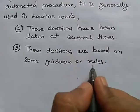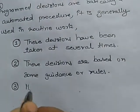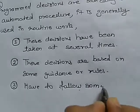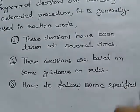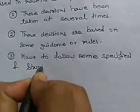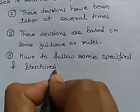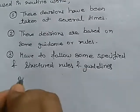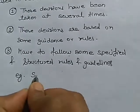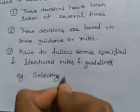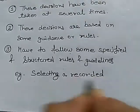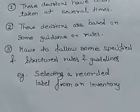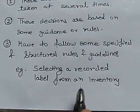These are programmed decisions. In this, we have to follow some specified, structured guidelines. For example, suppose we have an inventory — selecting a recorded label from an inventory is a programmed decision.